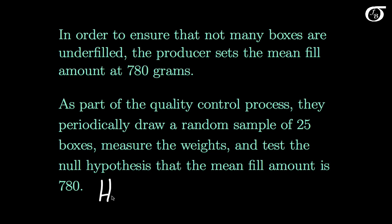In other words, they test the null hypothesis that mu, representing the true mean fill amount, is 780. And since they care about a difference in either direction, we are going to use a two-sided alternative. They want it to equal 780, so the alternative hypothesis is going to be that it's different from 780. And suppose for the sake of argument that they feel an alpha level of 0.05 is reasonable for this test.